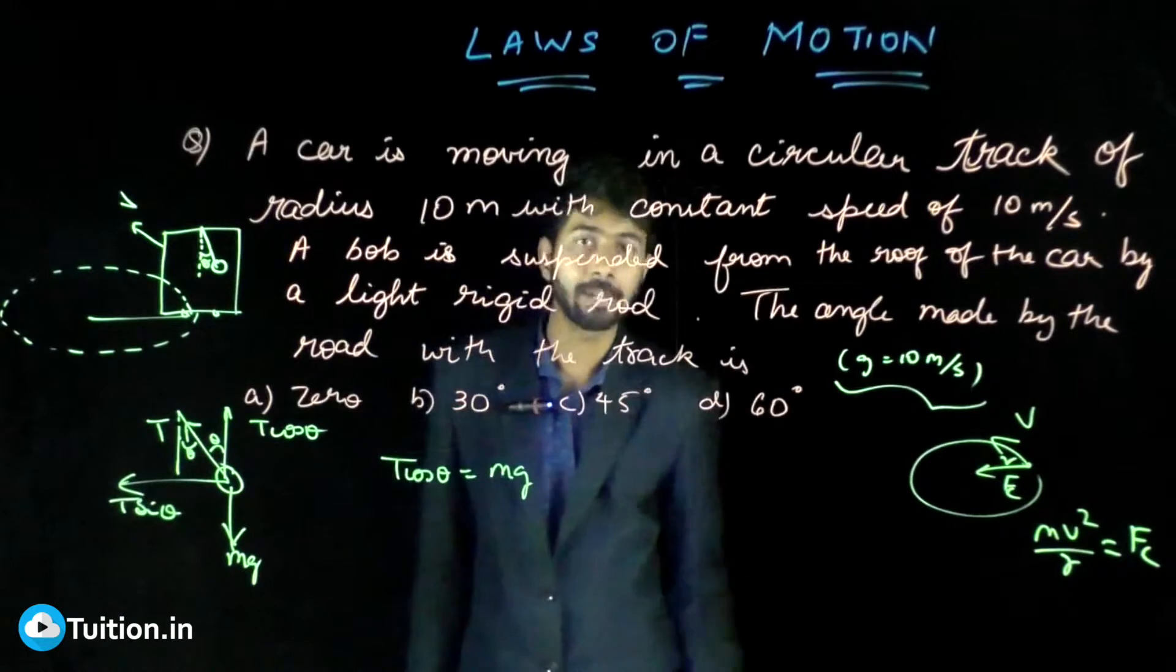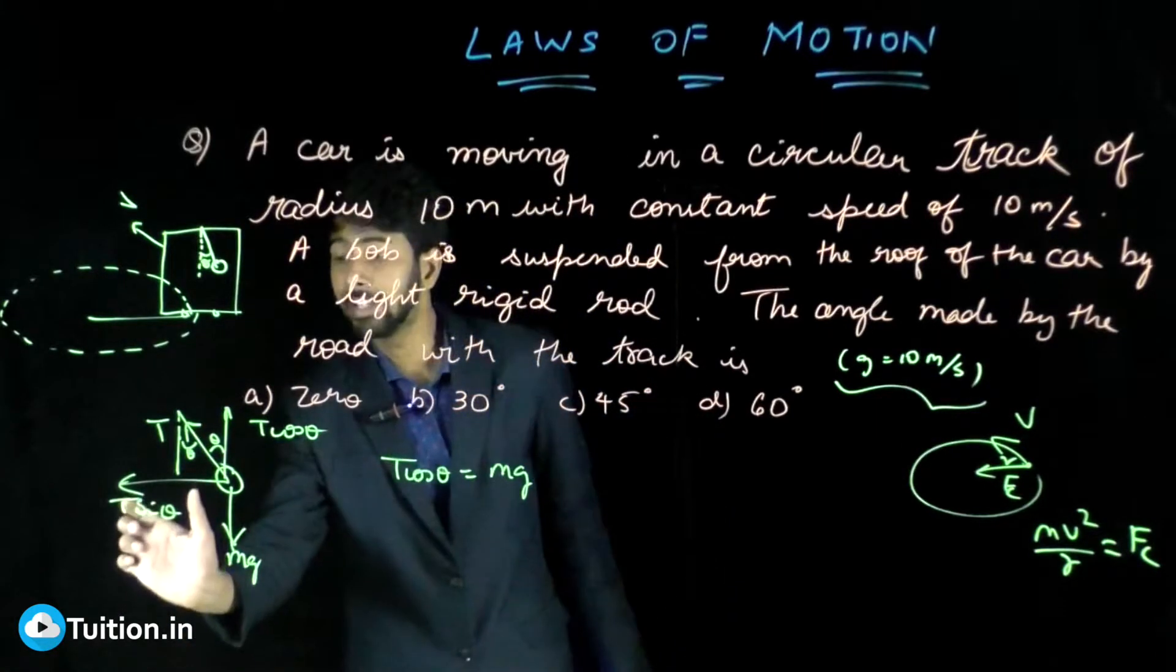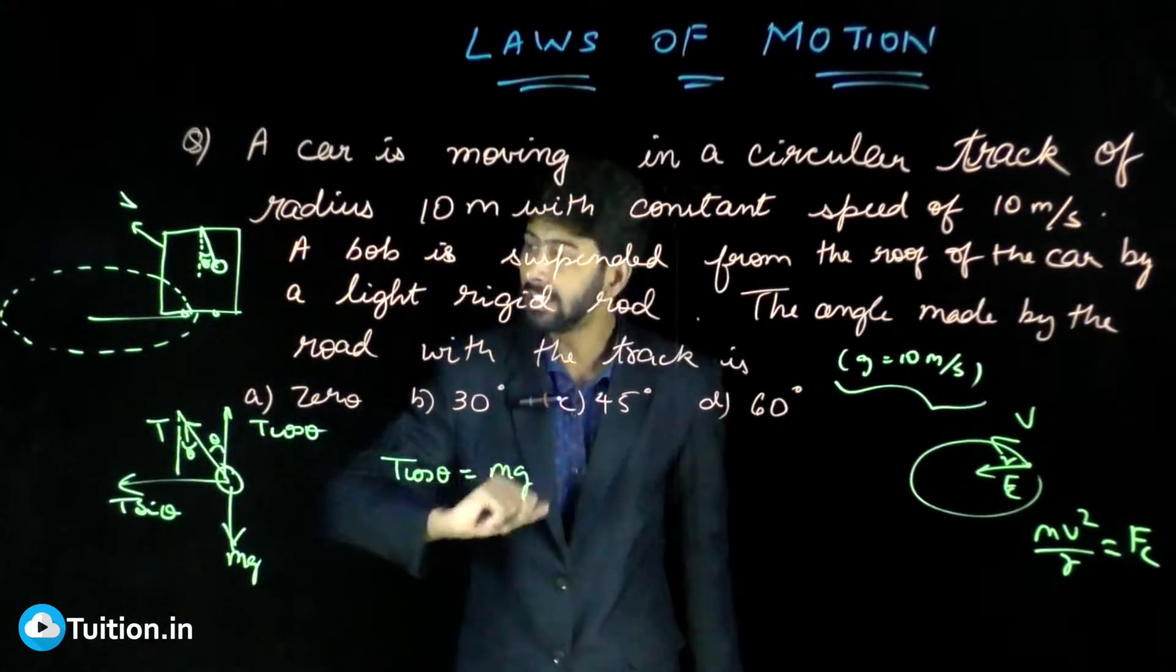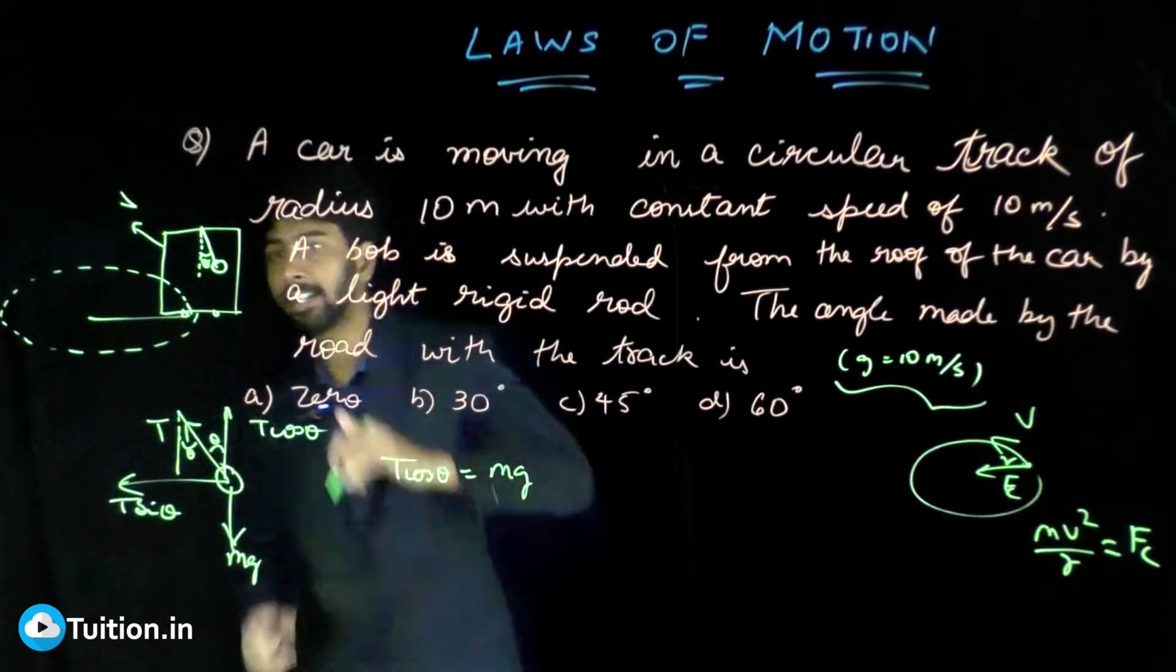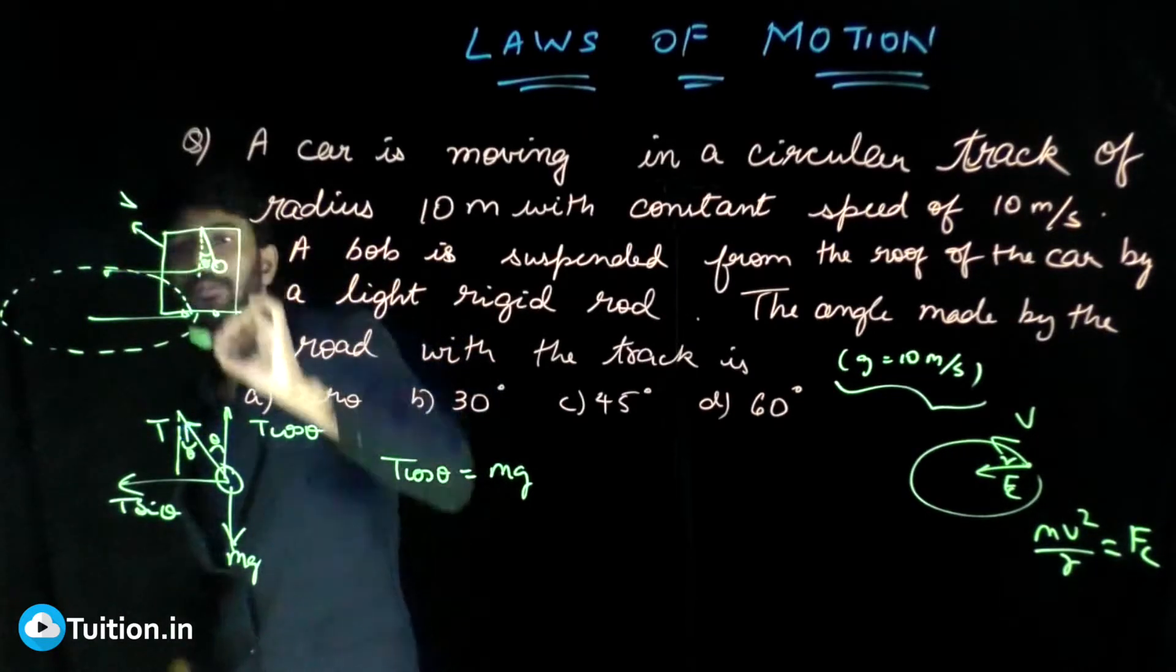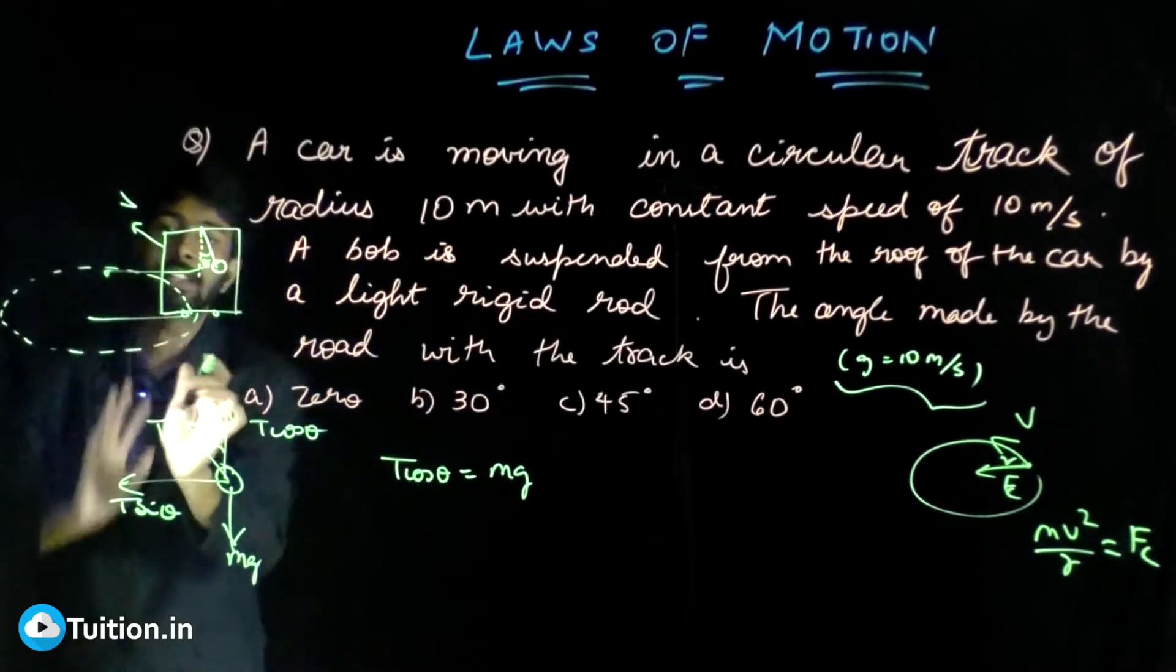Here T sin theta is an external force which acts on this bob. This T sin theta, as you can see, is directed along the center. The bob is at a distance r.